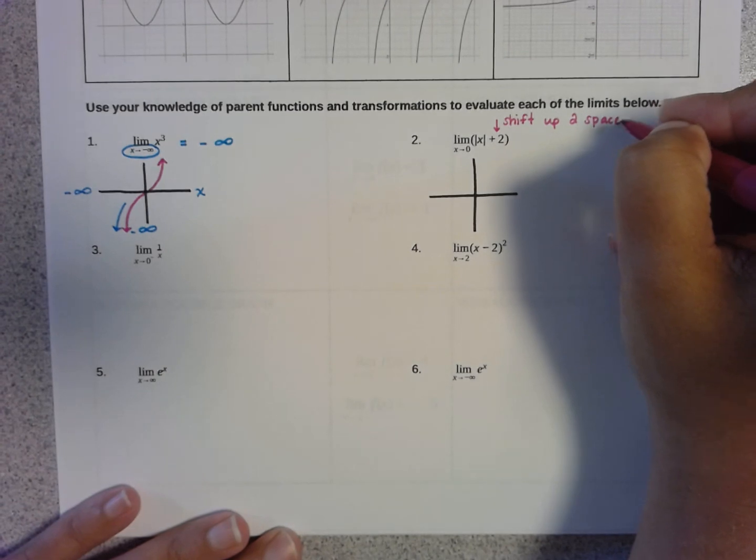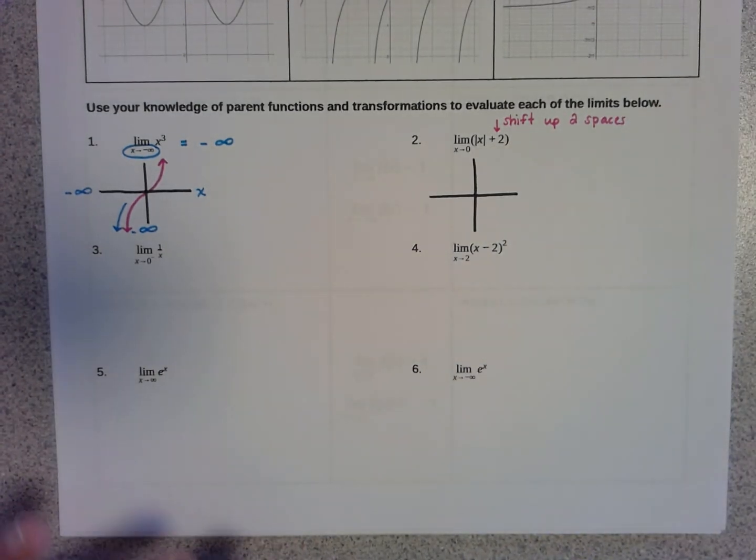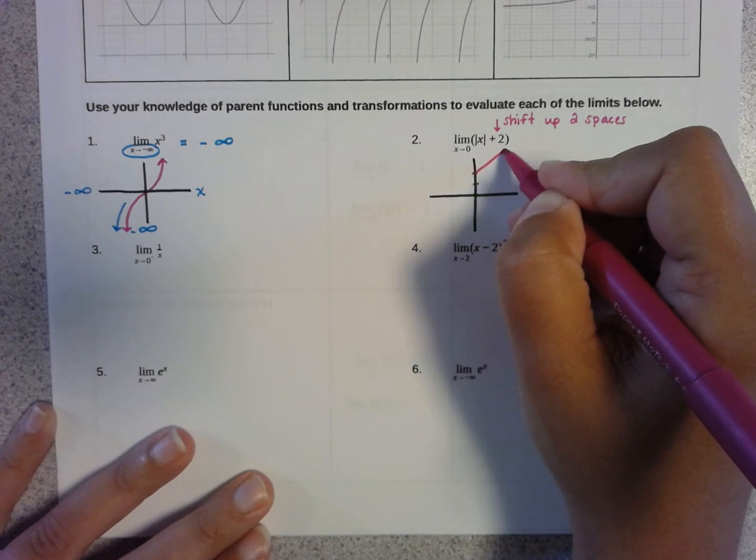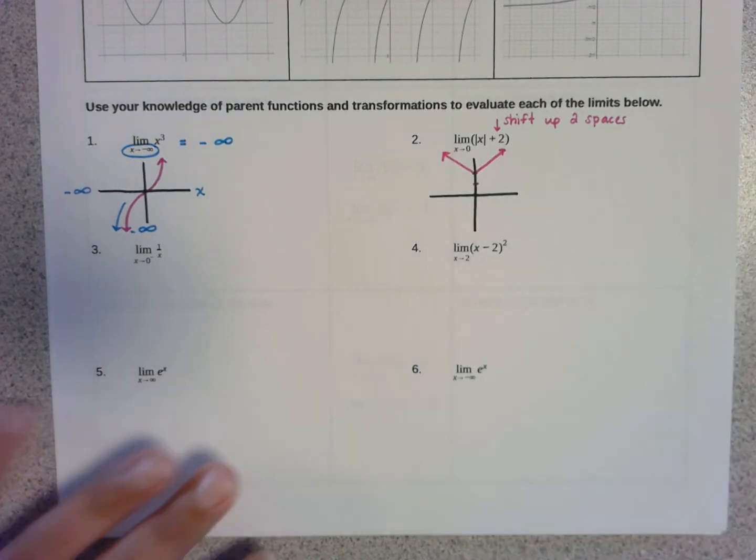So instead of the corner of the v being located at the origin, the corner of the v would be located up here, up two spaces.